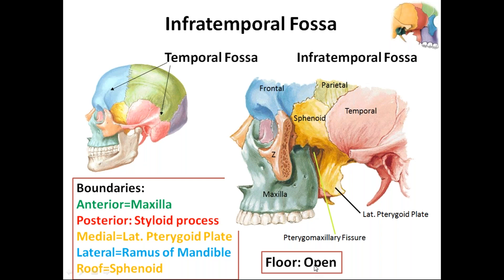The infratemporal fossa has a fissure between the pterygoid process and the maxilla called the pterygomaxillary fissure, through which it communicates with the pterygopalatine fossa. There is also a fissure above the maxilla called the inferior orbital fissure, through which it communicates with the orbit. Additionally, the foramen ovale opens into the infratemporal fossa, through which it communicates with the middle cranial fossa. These are the communications of the infratemporal fossa; more detail will be covered in the next session.